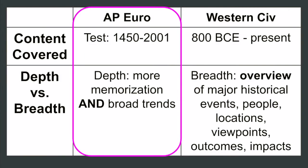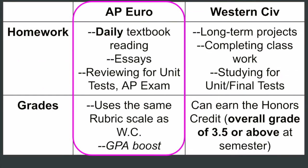The biggest difference in the two classes is the amount of work done at home versus in class. AP will typically come with daily reading and homework, and it will be important to keep up with your time management. With an AP class there is a boost to your overall GPA, and Western Civ does come with a possibility for honors credit.